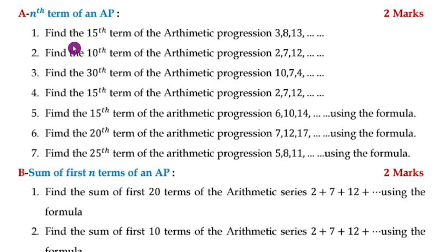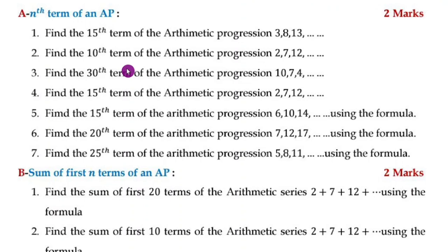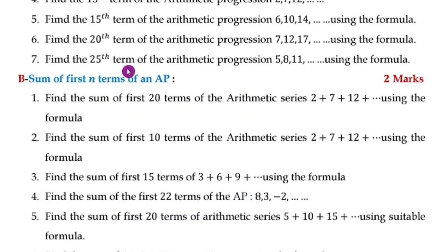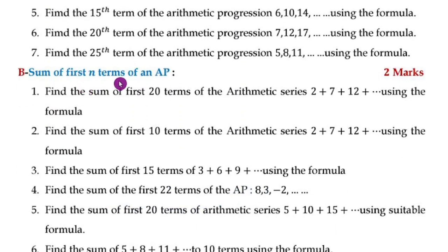First, I am going with arithmetic progression. In the model question paper and in the preparatory question paper, they ask you to find the terms of an arithmetic progression for two marks. I have given seven questions here. They may ask the 15th, 30th, or 25th nth term of an AP. By using the formula, easily you can score the marks.